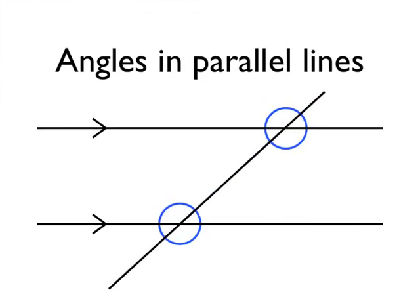When we're talking about angles in parallel lines, we have one pair of parallel lines, as you can see here, which we draw arrows on to show that those pair of lines are parallel. And then we have another straight line coming in which crosses that pair of parallel lines.